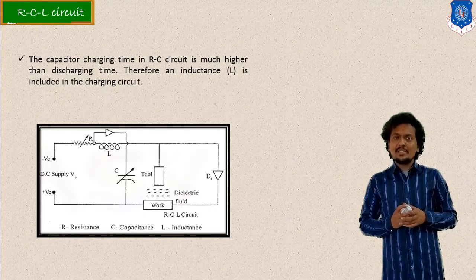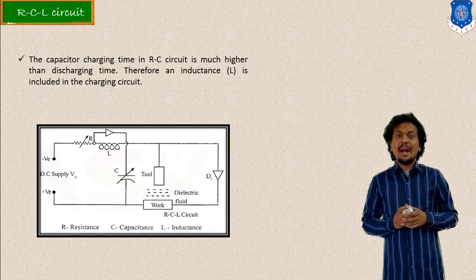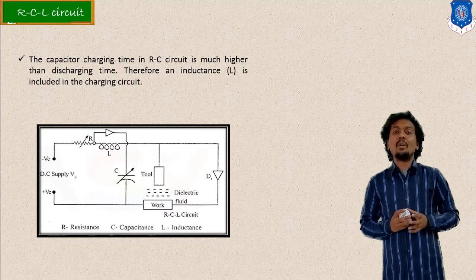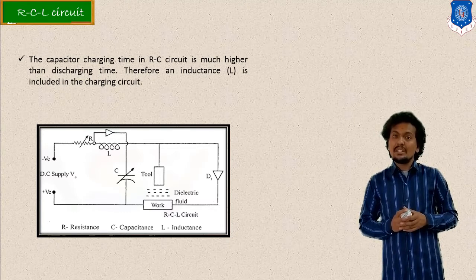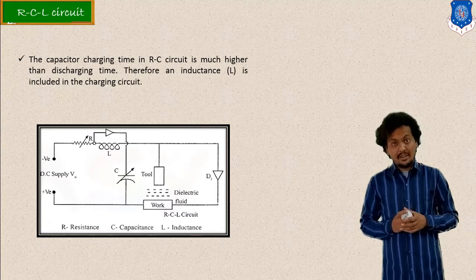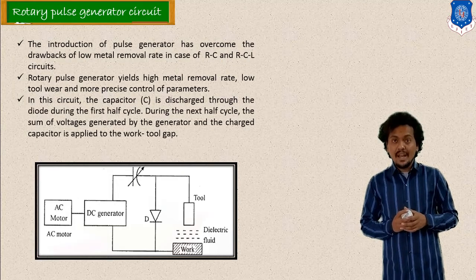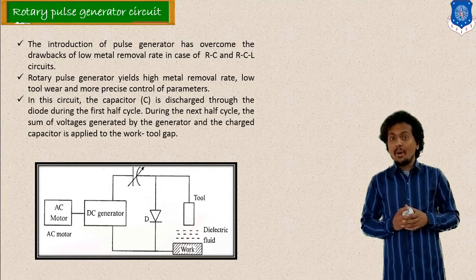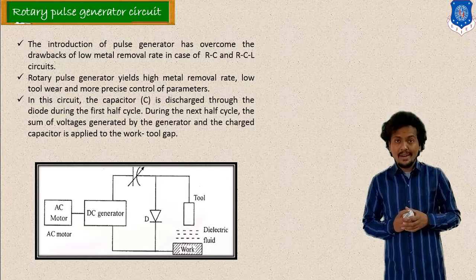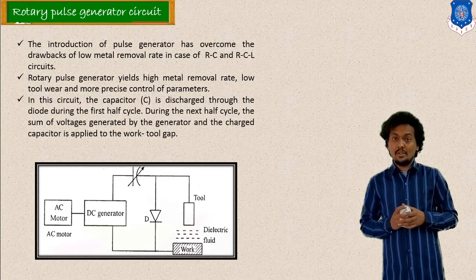After that, the RCL circuit is also used. The main problem with the RC circuit is the charging time of the capacitor. To overcome this, inductance is introduced — making it an RCL circuit — so that charging time is reduced. However, the main problem with the RCL circuit is the low material removal rate. To overcome this, a rotary type pulse generator circuit is generally used.